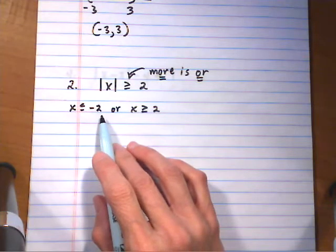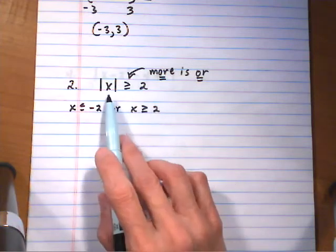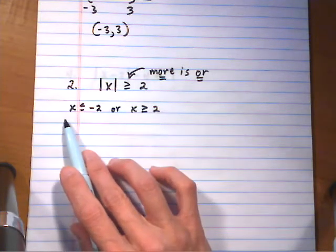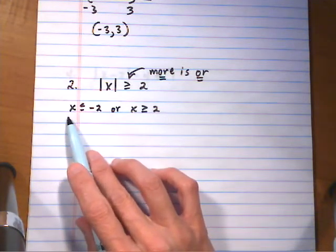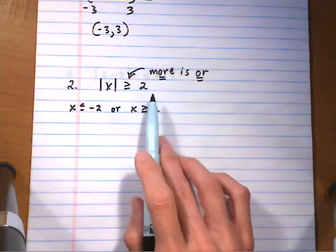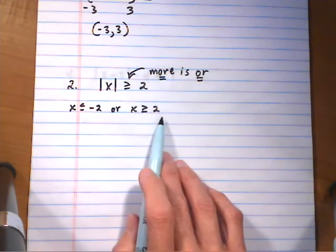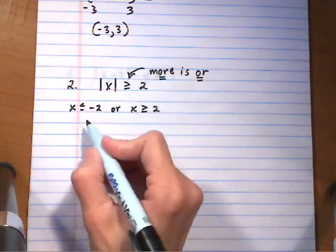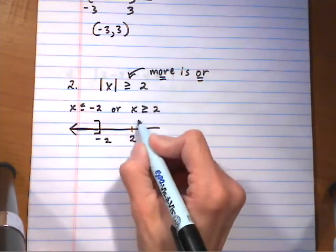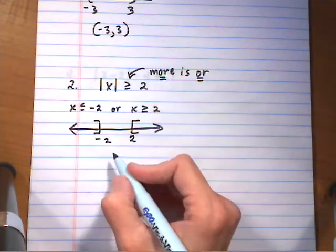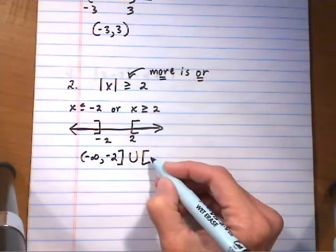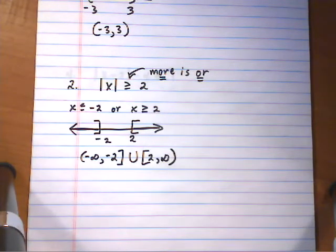That makes sense: if I put in something larger than 2, like 5, the absolute value of 5 is 5, which is greater than or equal to 2. And I can also go more to the left of negative 2 — putting in negative 5 gives absolute value of negative 5 equals positive 5, which is greater than or equal to 2. The graph shows x ≤ -2 or x ≥ 2. Interval notation: (-∞, -2] ∪ [2, ∞).